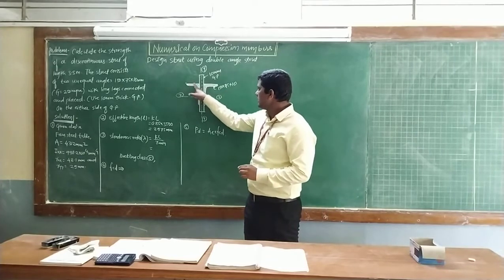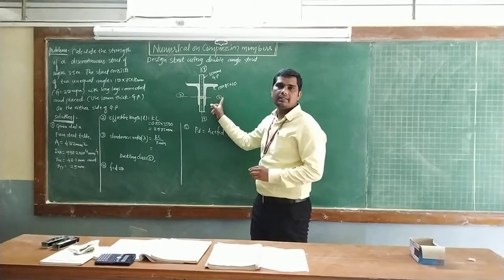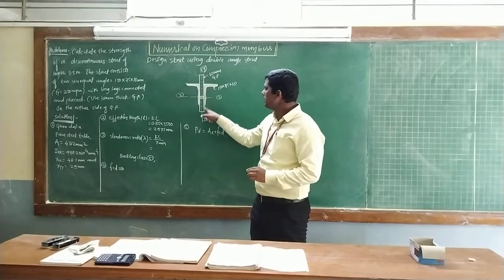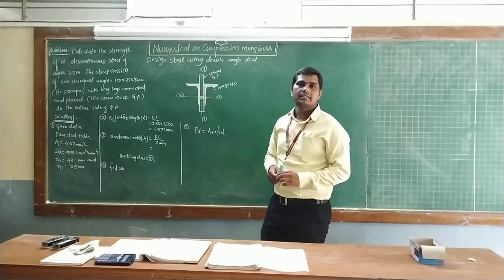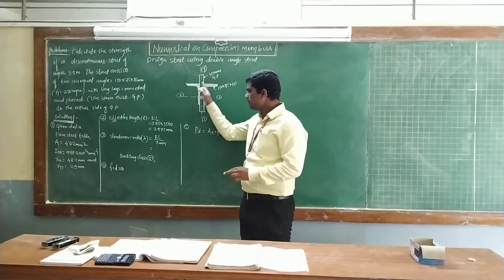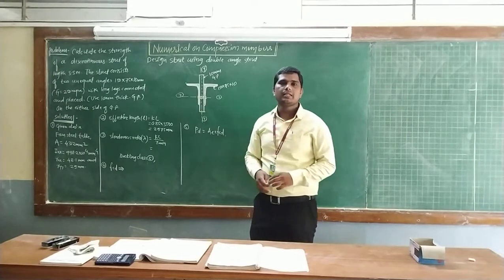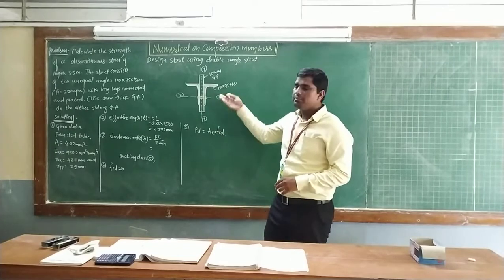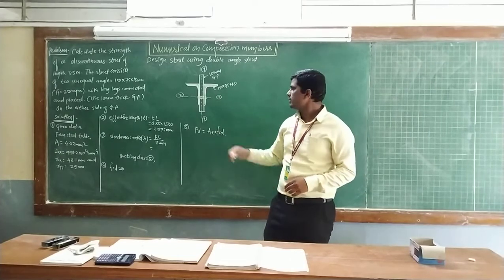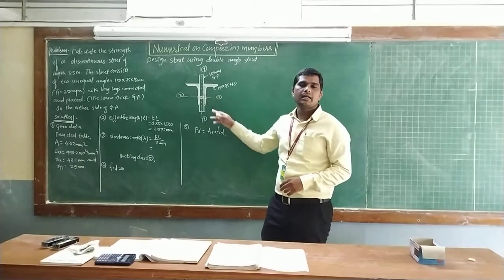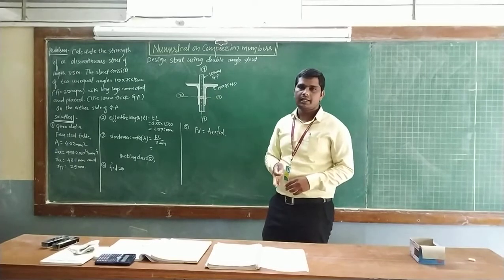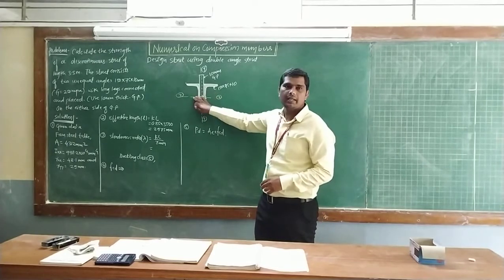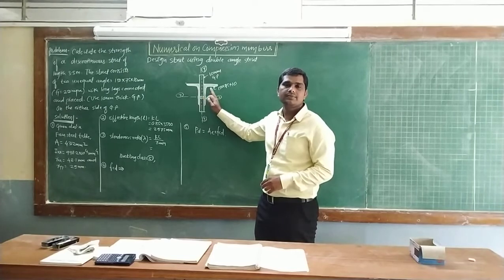This double angle is placed on either side with a gusset plate provided in between. This kind of numerical may be asked in the semester. The question may arise when both angles are placed on the same side or back to back on either side. This is the first type of numerical.